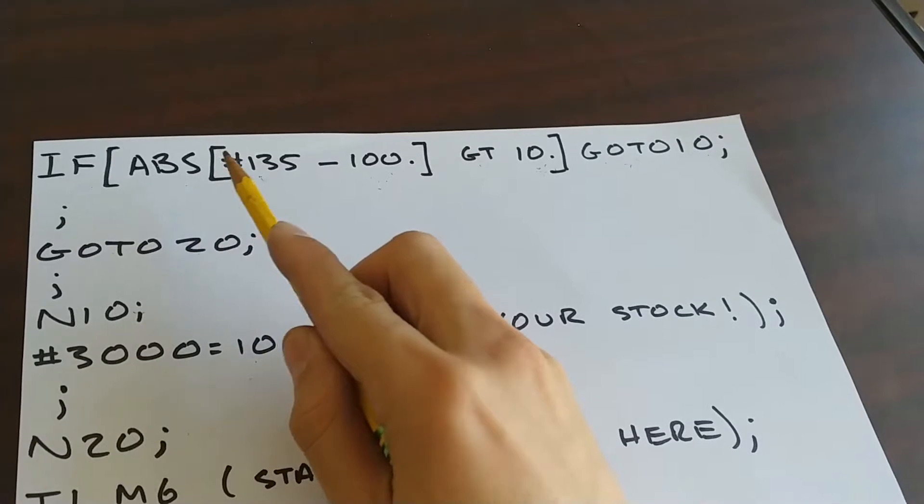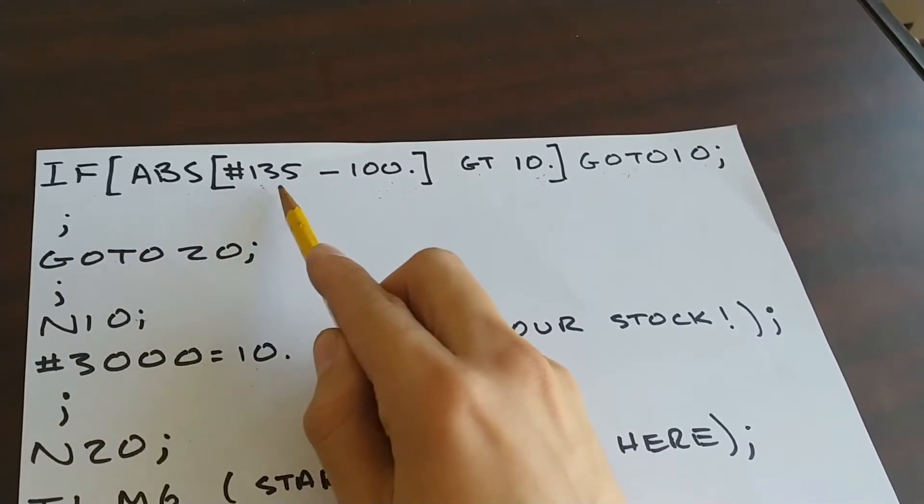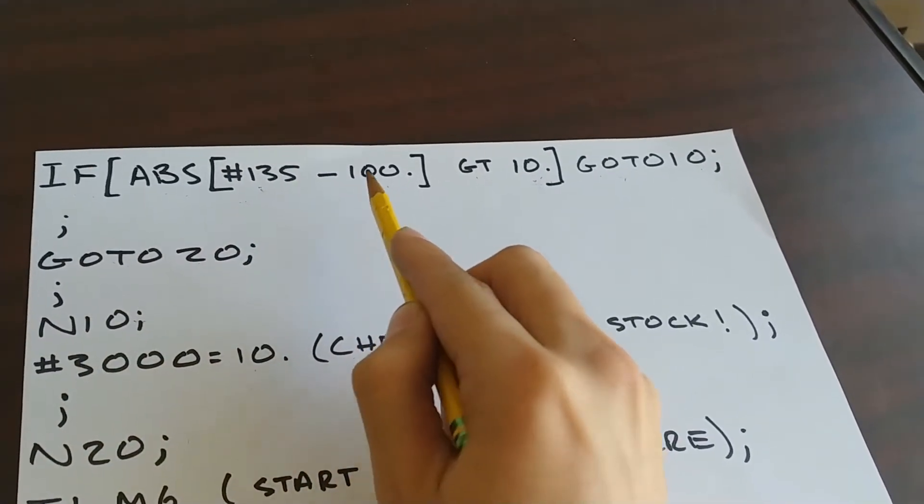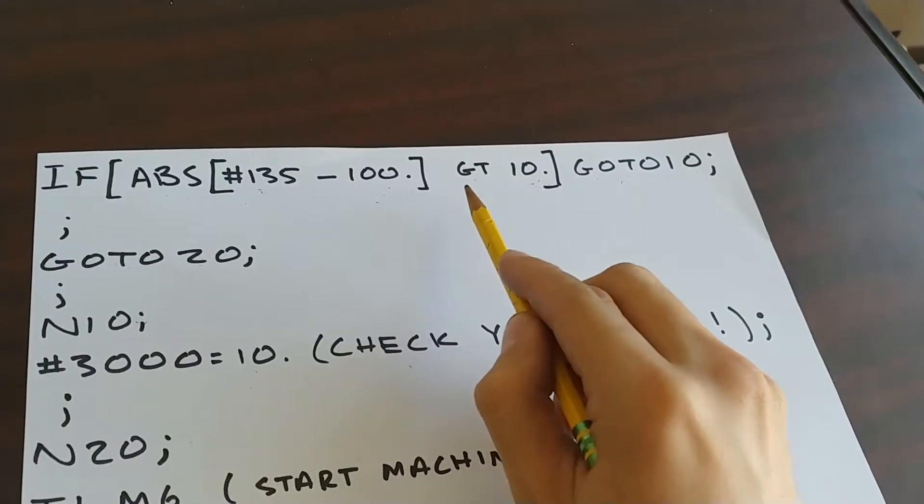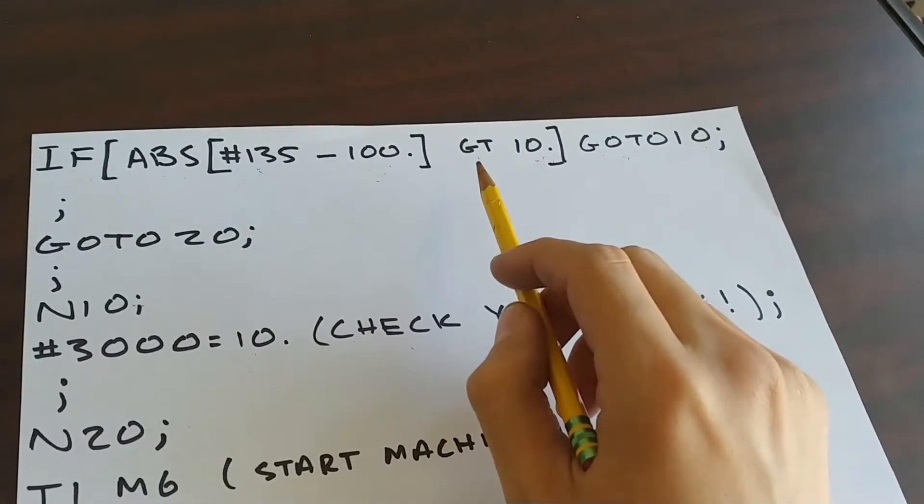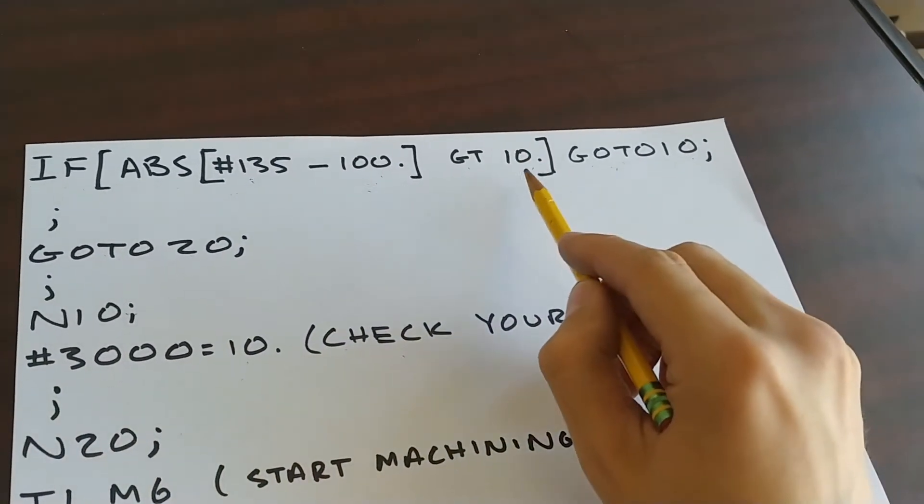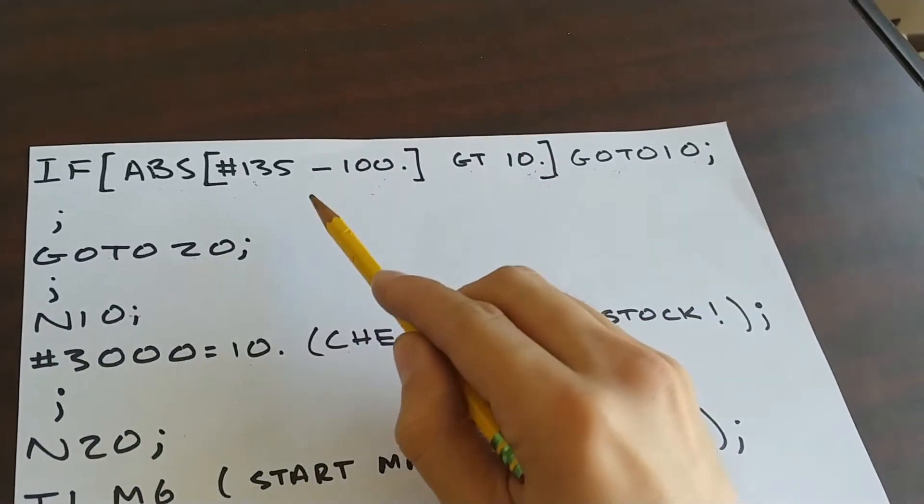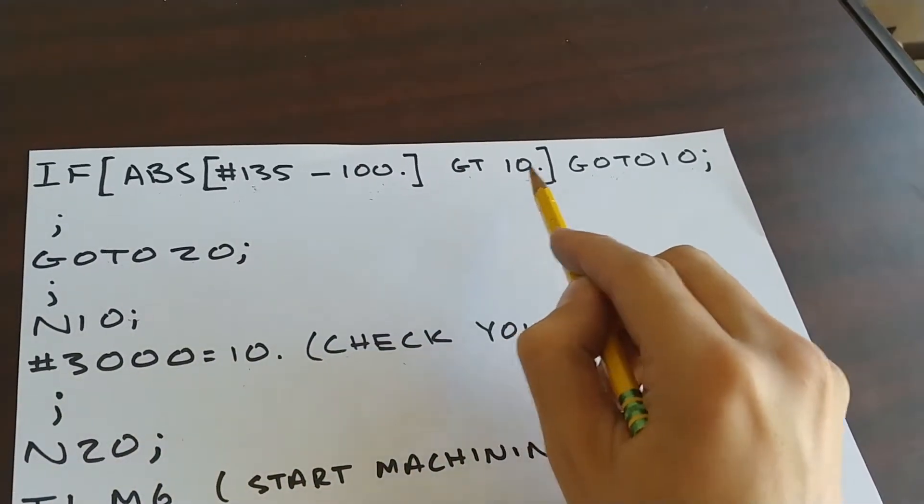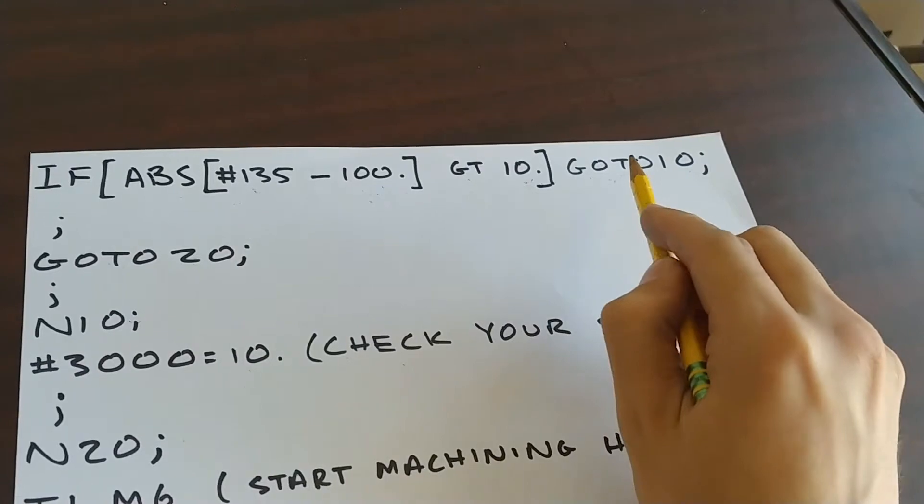So in here we have absolute value of pound 135 minus 100, that's going to be a number. GT for greater than, which is the comparison, this number 10. So if this number is greater than this number, we're going to do this, go to line 10.